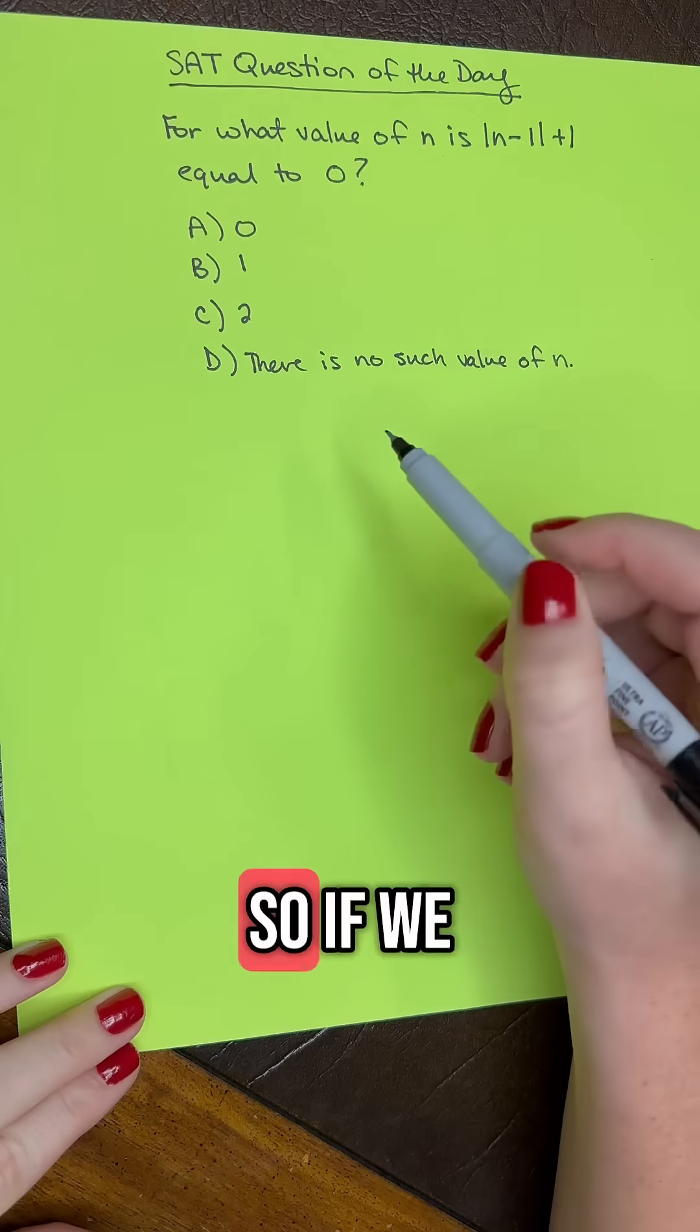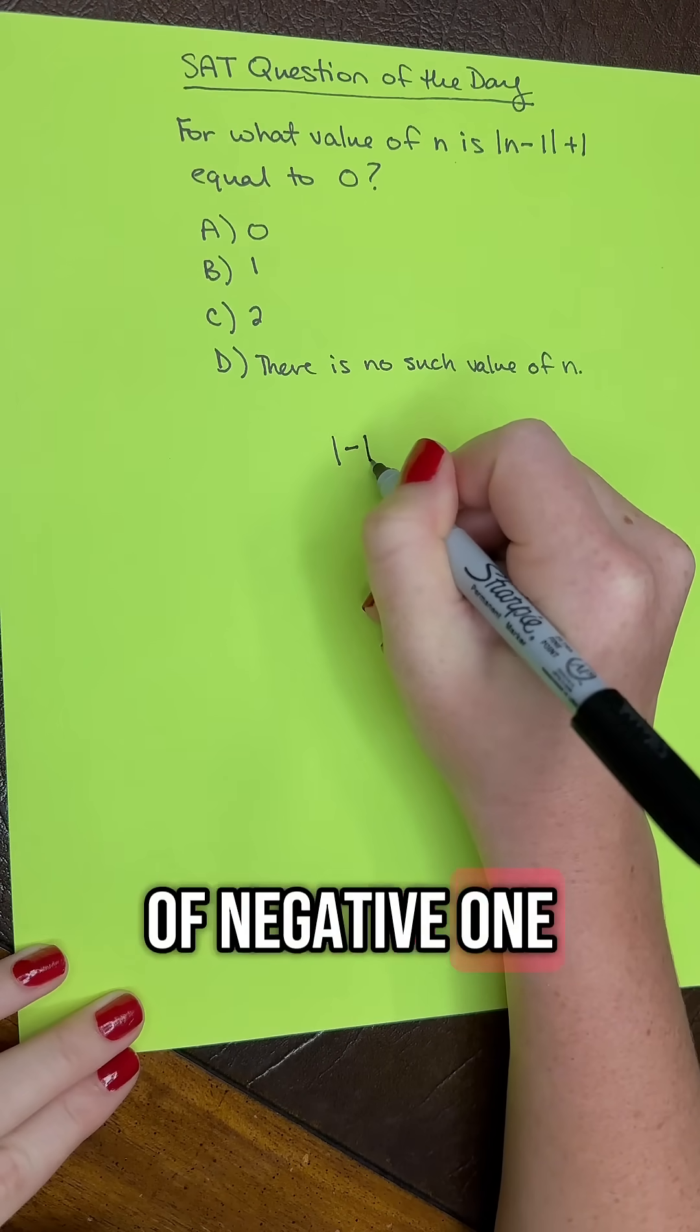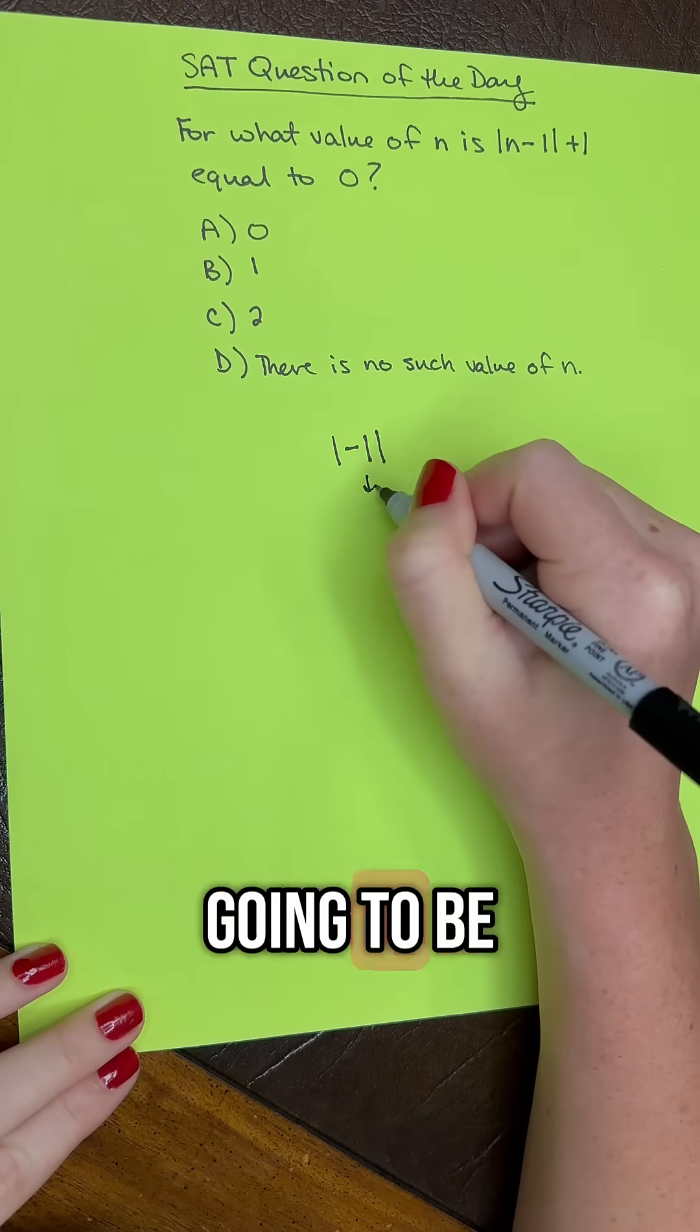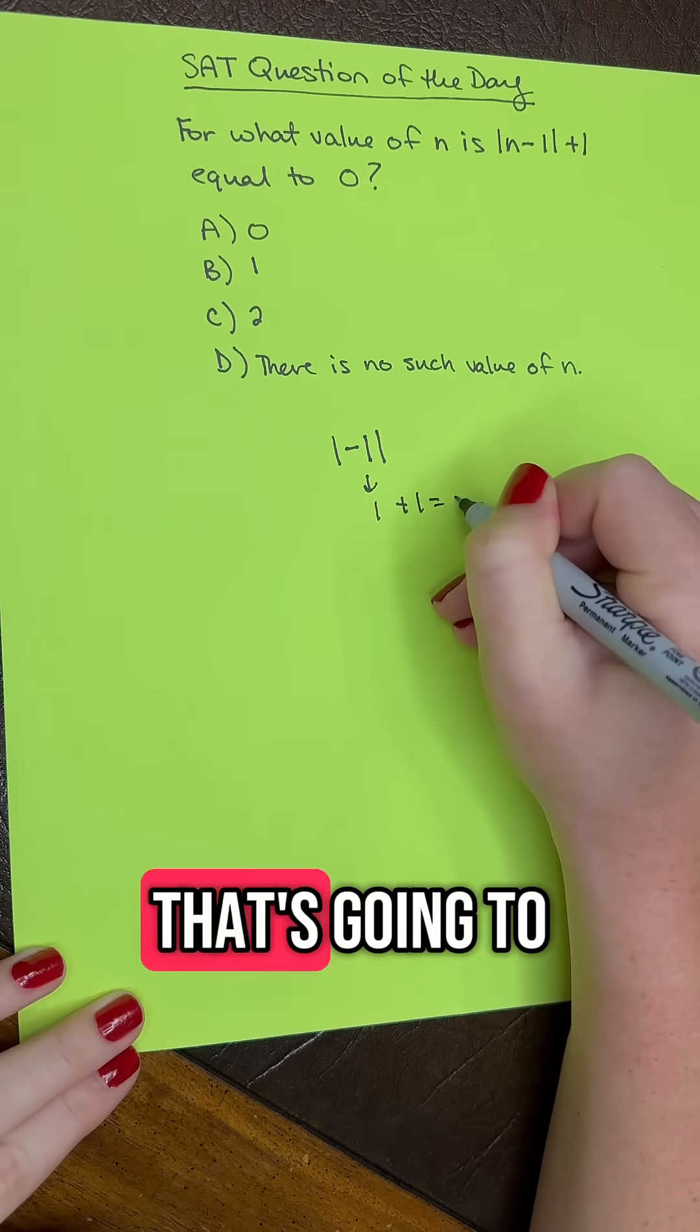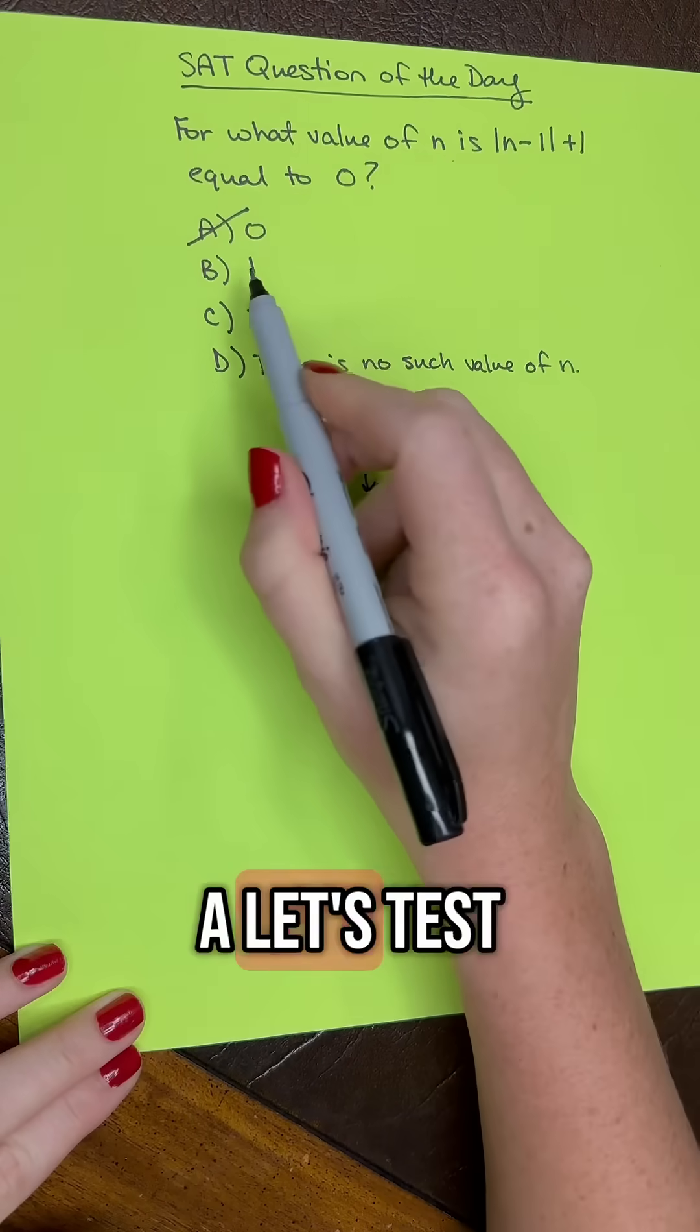So let's start with A here. If we plug in 0, we're going to get absolute value of negative 1, and that's just going to be 1 plus 1, that's going to be 2, not equal to 0, so cross out A.